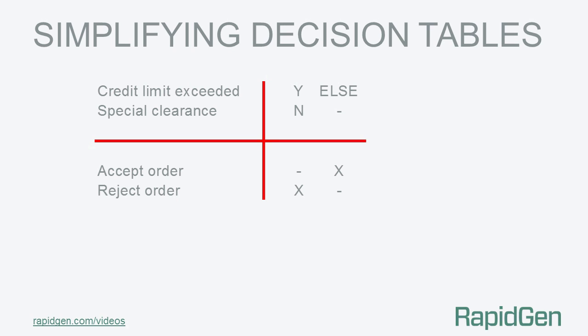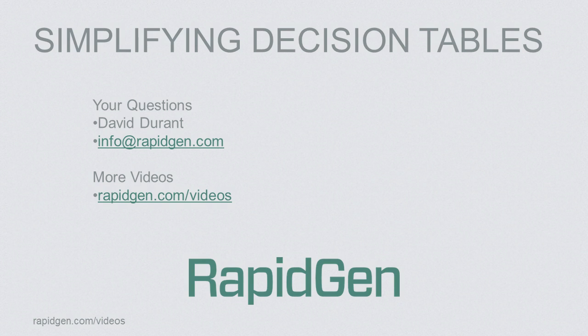Otherwise, we will accept it. I hope you have found this video useful. More videos like this are available at rapidgen.com/videos. Please let us know if you have any questions about simplifying decision tables, or if we can help. Send us an email at info@rapidgen.com or use the options below to leave a message. Thank you for watching.